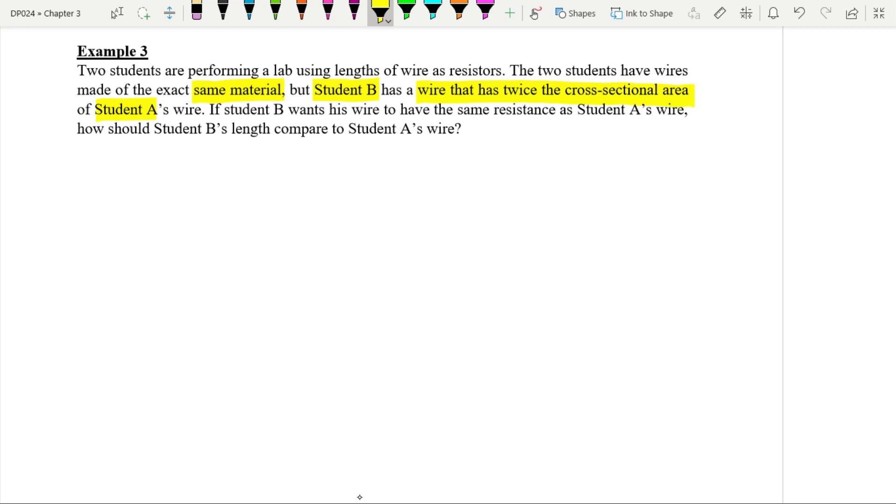So student B has a wire that is twice the area, the cross-sectional area of student A's wire. If student B wants his wire to have same resistance as student A, the resistance of wire of student B is exactly the same as resistance of wire of student A. How should student B's length compare to student A's wire? So we need to compare length of wire for both students.